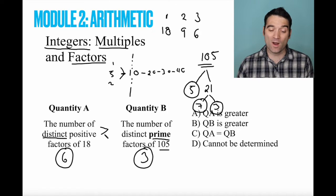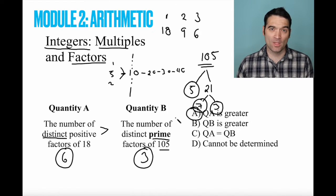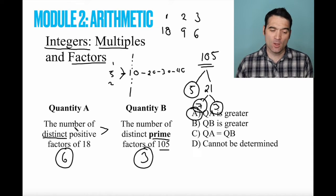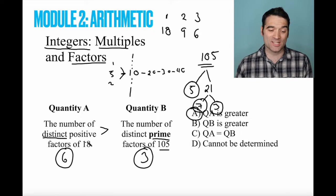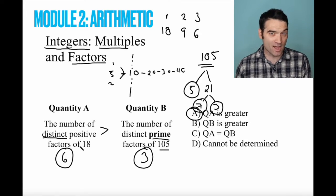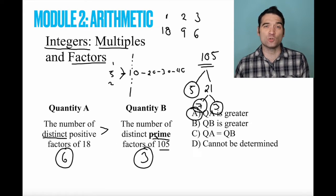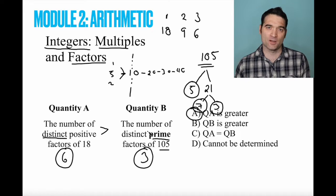This means that quantity A is greater. One important note, in case you're a little confused about this number tree business, we couldn't use a number tree here because quantity A was asking about all of the factors of 18, not just the prime factors. A number tree is great when you're looking for the individual prime factors of a number.